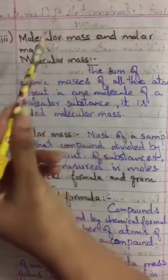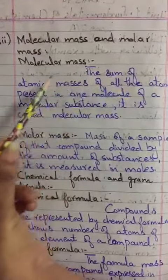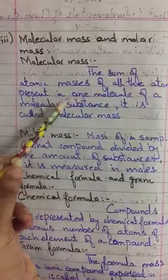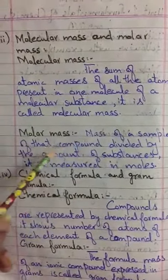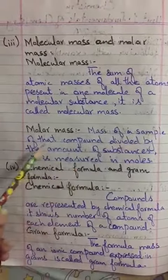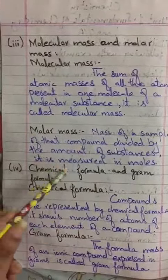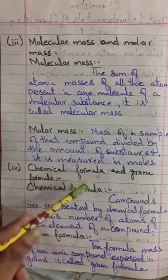Molecular Mass and Molar Mass. Molecular Mass: the sum of atomic masses of all the atoms present in one molecule of a molecular substance, it is called molecular mass. Molar mass: mass of a sample of that compound divided by the amount of substance, it is measured in moles.